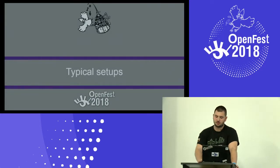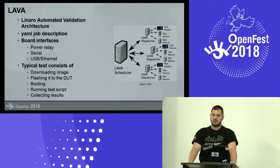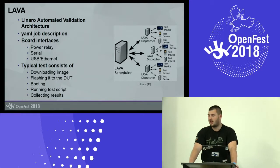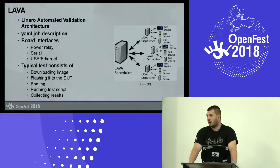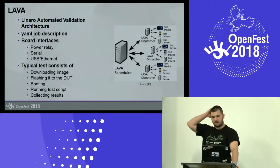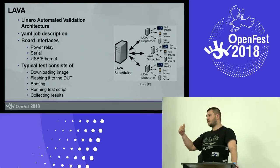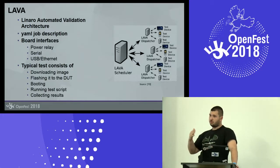What are the typical setups available in the open source community? The first, probably most well-known, is LAVA — Linear Automated Validation Architecture. LAVA consists of two elements: the LAVA Scheduler, or LAVA Master, and the LAVA Dispatcher. The LAVA Master is a server which provides a single API you can use to schedule jobs, described using YAML job descriptions. The LAVA Dispatcher has real hardware connected to it and can put your kernel or system image on the device and execute your tests. To connect boards, you use power relays, serial adapters, USB hubs, and an Ethernet switch.